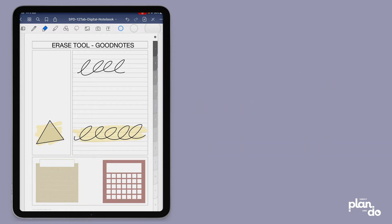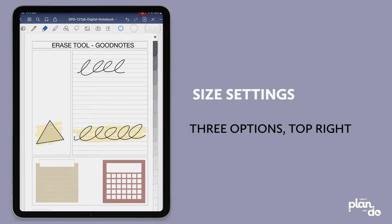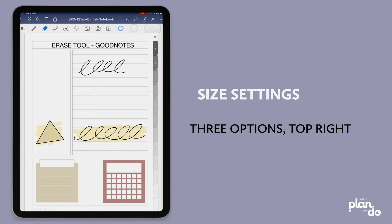When you first switch it on, on the top left, you can see on the right hand side of the toolbar there, you've got three sizes: small, medium, and large. You can just click on whichever one, depending whether you're being close up and detailed or whether you just want to wipe out a big area.